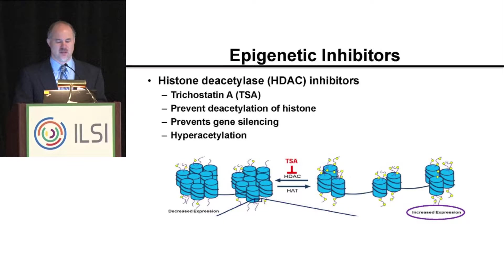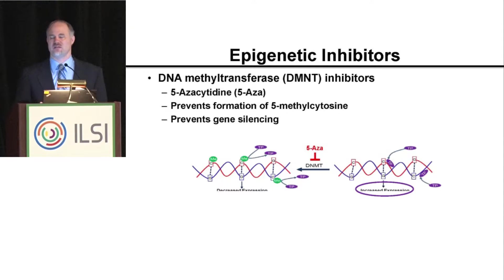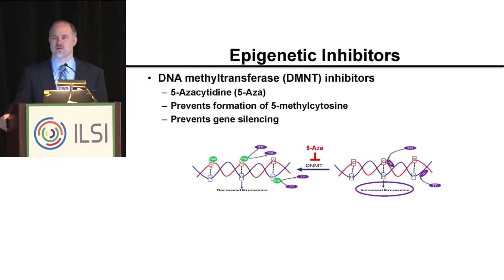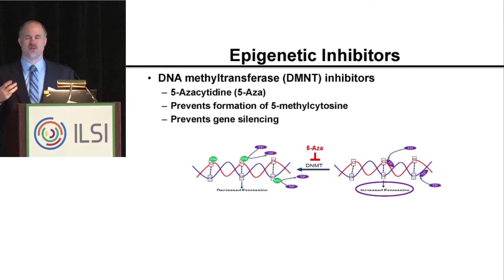Then you have DNA methyltransferases, which add methyl groups to your DNA. By doing that, it makes them inaccessible to transcription factors, and that DNA is not going to be transcribed. These are two examples of epigenetic events that we're going to use with a case study with bromate.